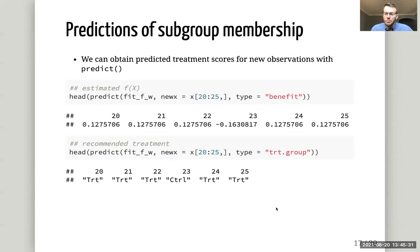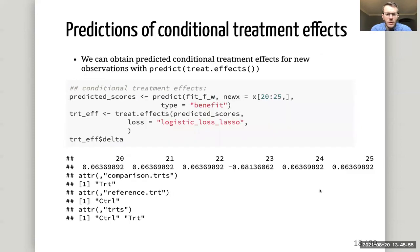We can get predictions of subgroup membership with the predict function. For a new set of patients, we can use this predict function with type equals treat.subgroup to see which patients have a positive scoring function, or we can return the estimated scoring function values for those patients. We can also obtain estimates of the conditional average treatment effect with the treat.effects function.